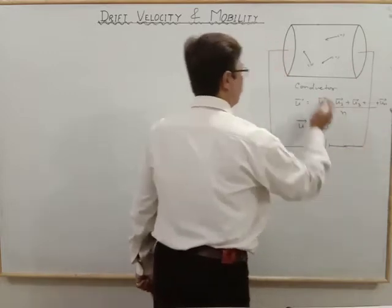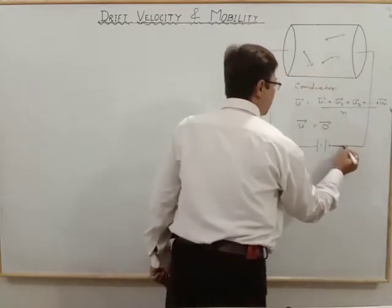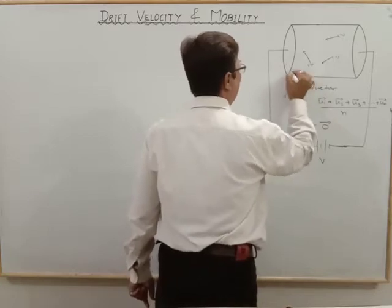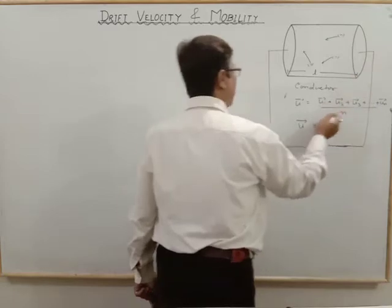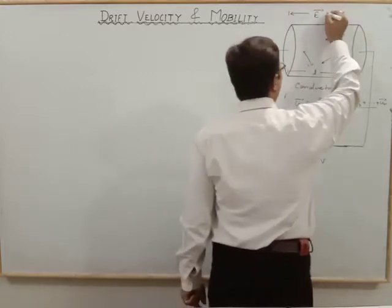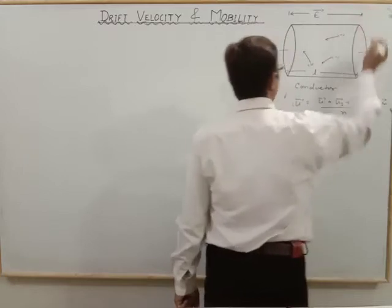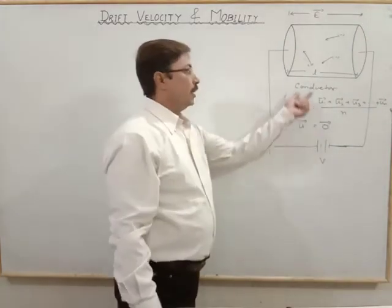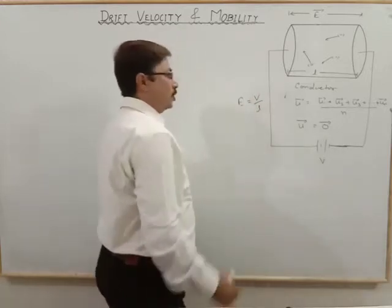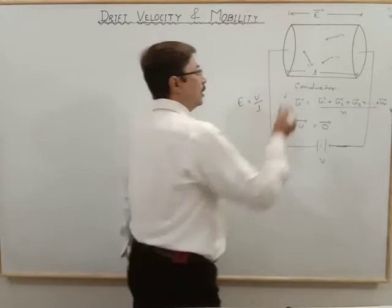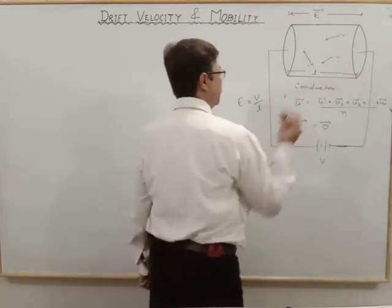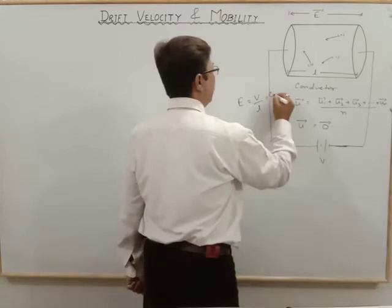Now, if we connect a battery here, what happens? In that case, L is the length of the conductor. It produces an electric field E. The electric field E vector equals V by L — potential divided by the length of the conductor — and this is constant.